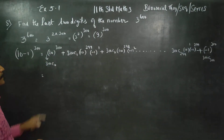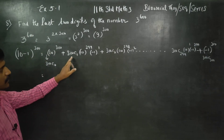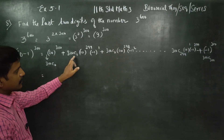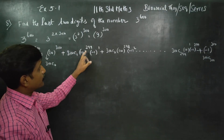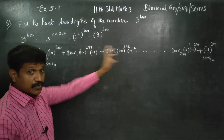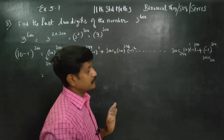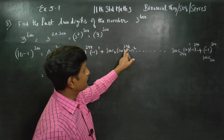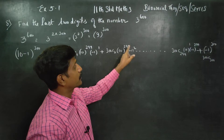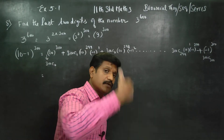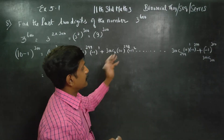The first term is 10 power 300. The next term is 300C1 into 10 power 299. 10 power 299 means 10 multiplied 299 times, giving 299 zeros. 10 power 298 gives 298 zeros. All terms with 10 power 2 or higher contribute zeros to the last two digits.